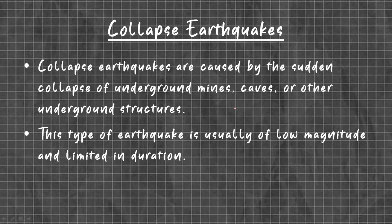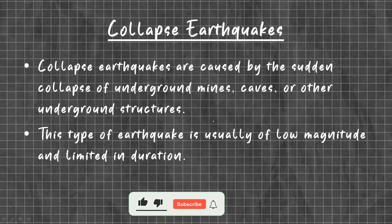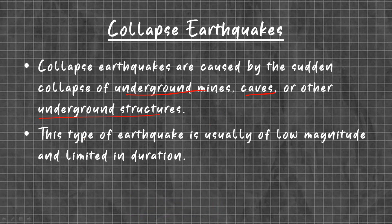Collapsed earthquakes are caused by the sudden collapse of underground mines, caves, or other underground structures. This type of earthquake is usually of low magnitude and limited in duration. Tectonic and volcanic earthquakes are the most common and most devastating earthquakes when compared to collapse earthquakes and other types.